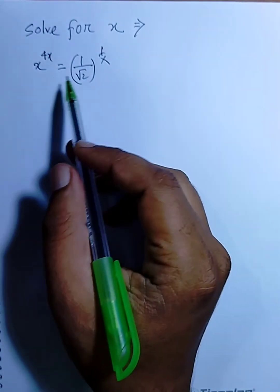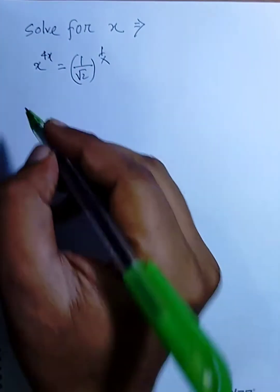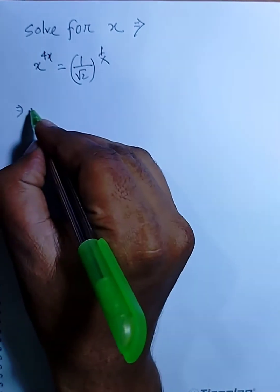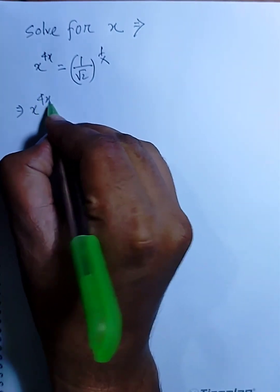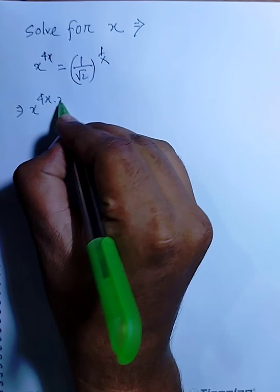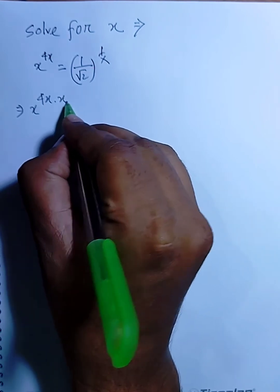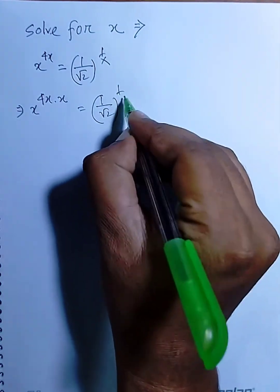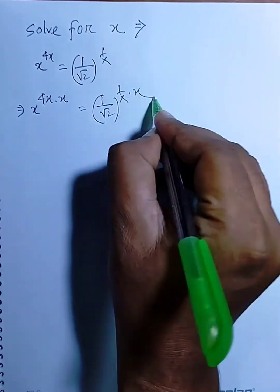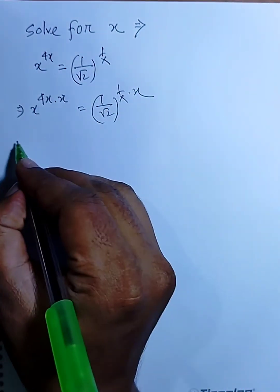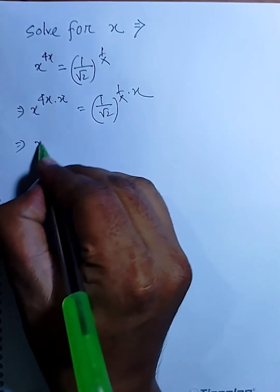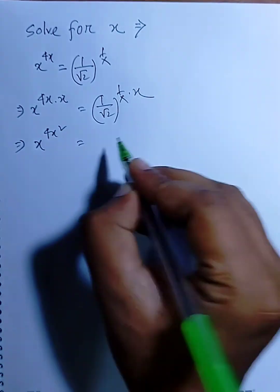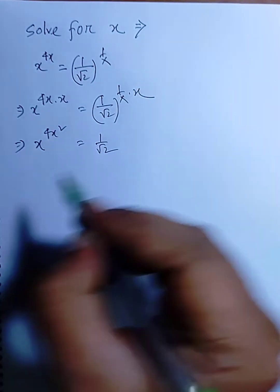Solve for x. What is the value of x? So first of all, x to the power 4x dot x equals 1 by root 2, which is 1 by x dot x. So now I can say, x to the power 4x squared equals 1 by root 2.